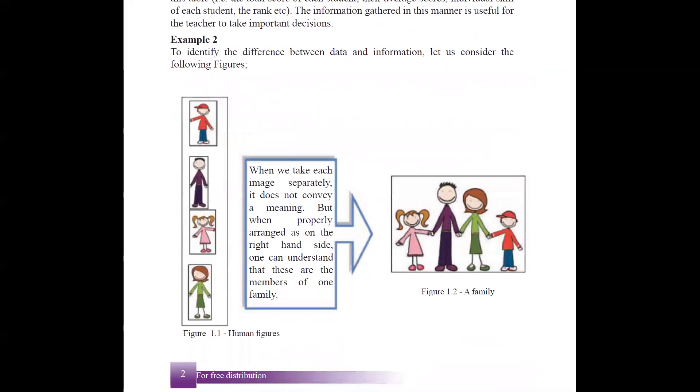And there's another example. So here they have given some pictures, images. So if you take them separately, nothing much. But if you put it together, and if you create like this, if you arrange like this, it gives more understanding, it's a member of family. So it has more meaning. So this is information, this is just raw facts, just data.